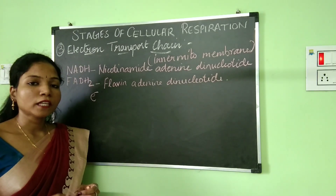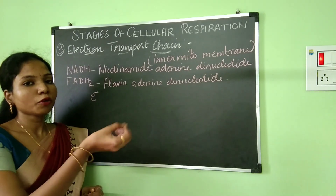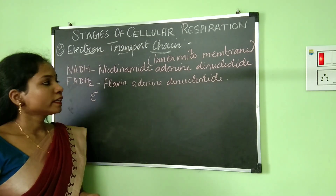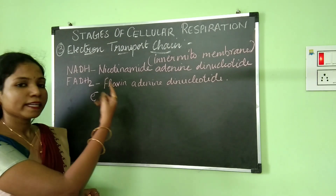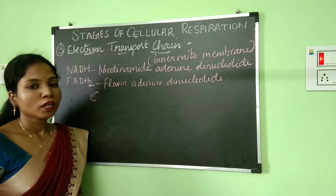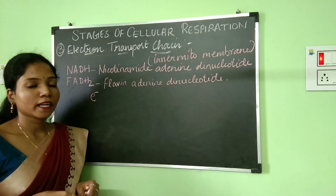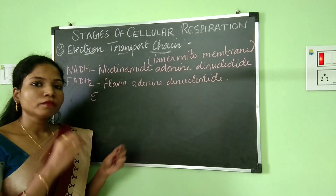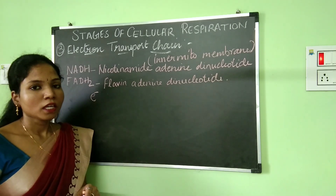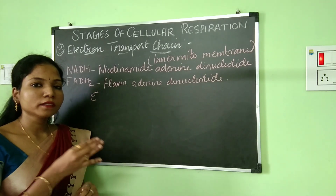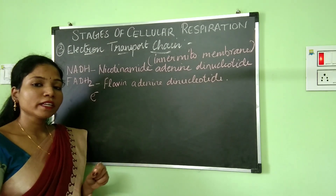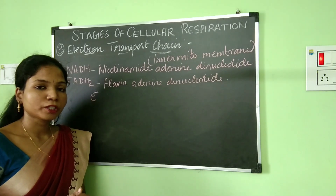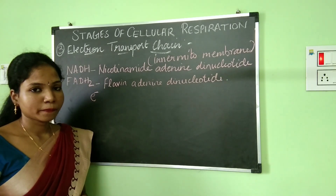From the name of the process itself, you can identify that electrons are going to be transported. So which part is actually going to produce the electrons? It is these two compounds — NADH and FADH2. These two compounds are coming from the process of glycolysis and Krebs cycle. During glycolysis and Krebs cycle, NADH and FADH2 are released, which are then utilized in the electron transport chain to donate electrons.